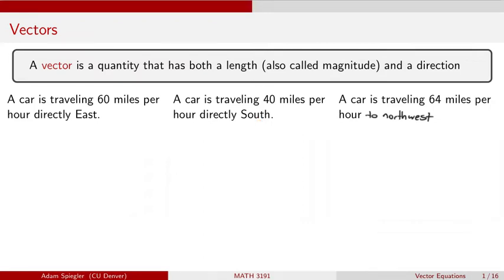The last one is a car that's driving 64 miles per hour to the northwest. I forgot the direction on this originally. So again, we have a speed and we have a direction. Let's take a look at this first example. A car is traveling 60 miles per hour directly to the east.